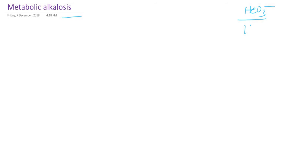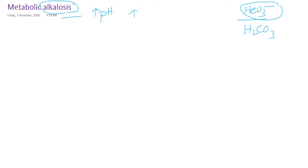We know what the metabolic component is. Carbonic acid is the respiratory component, and bicarbonate is the metabolic component. Metabolic alkalosis means alkalosis — an increase in the pH, more than 7.45. This increase in pH is due to an increase in bicarbonate.